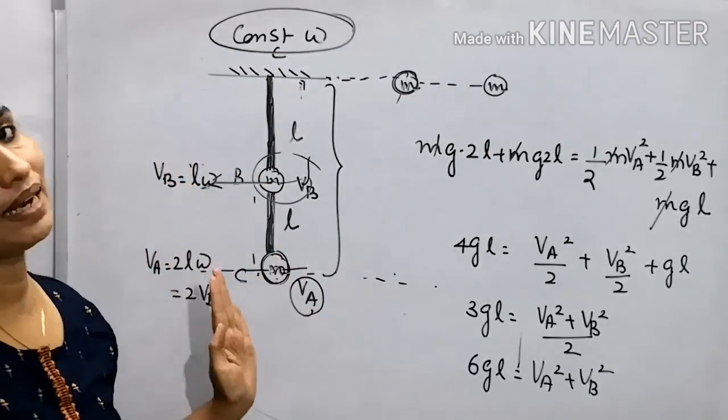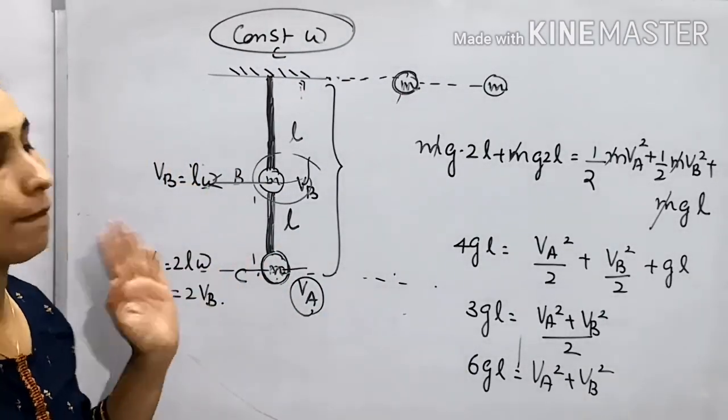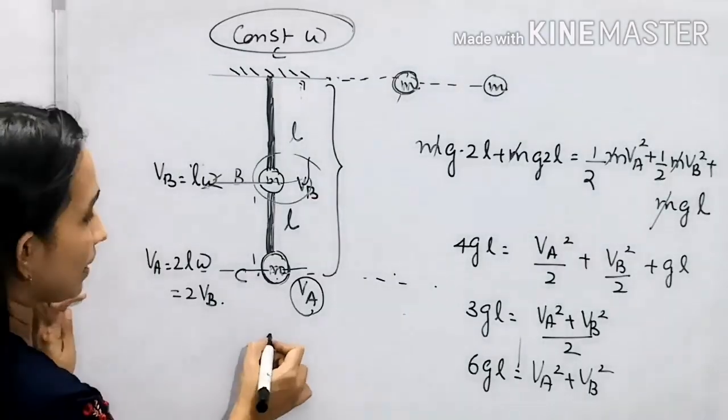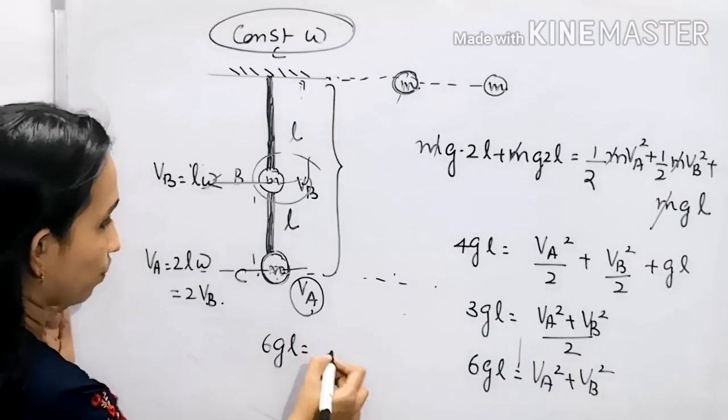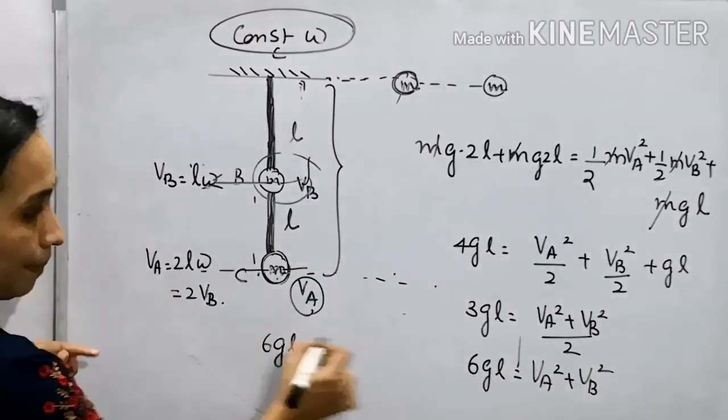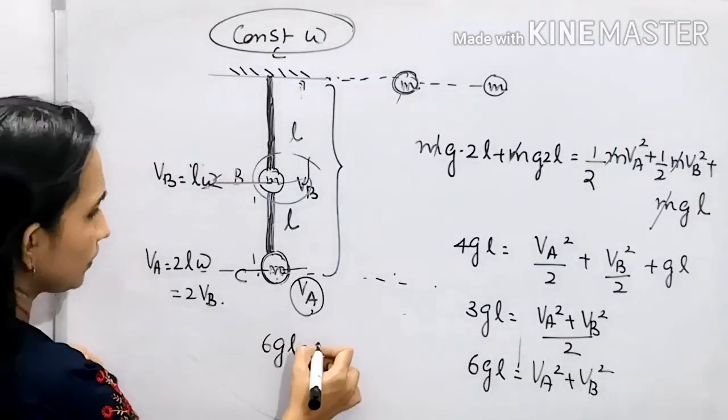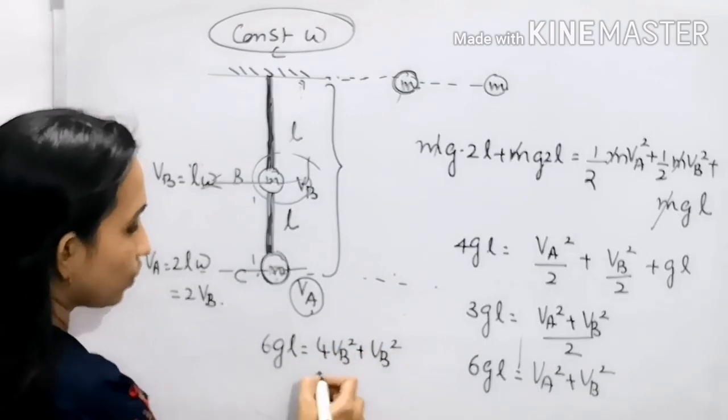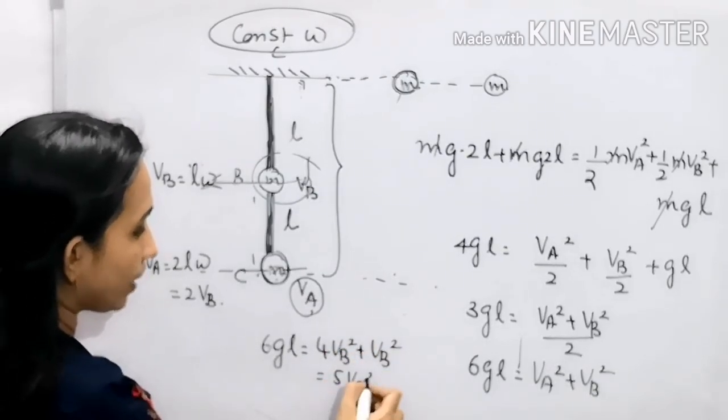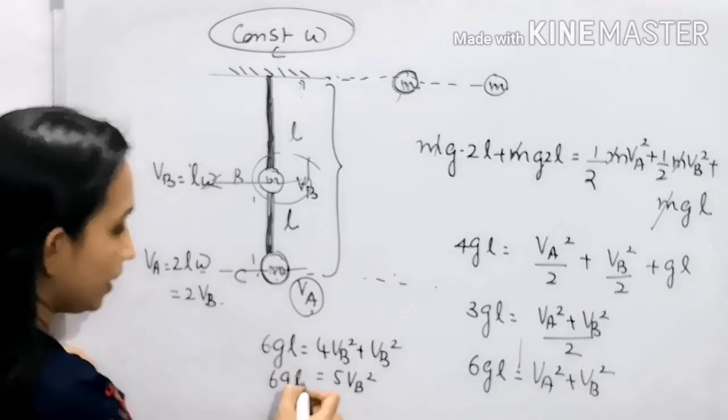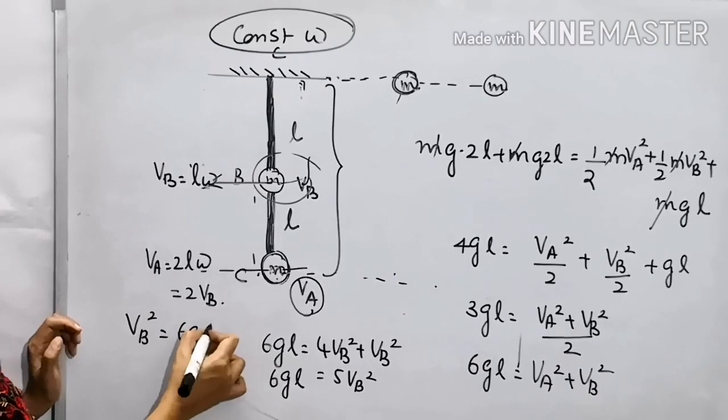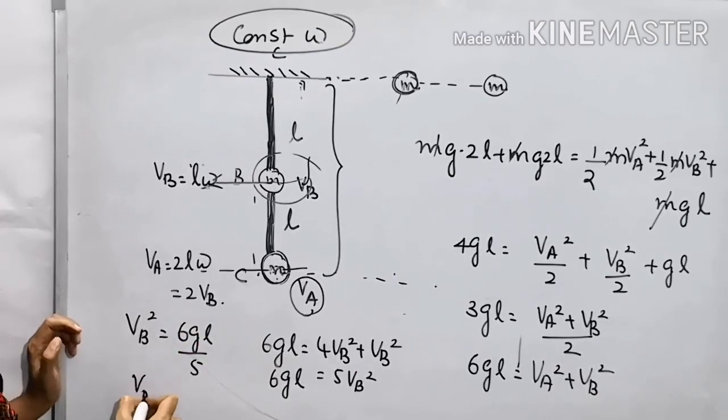Substitute: 6GL equals VA square. VA is 2VB, so 4VB square plus VB square. That gives us 5VB square equals 6GL. So VB square equals 6GL divided by 5. VB equals root of 6GL divided by 5. This is the answer.